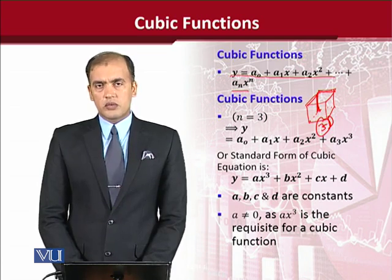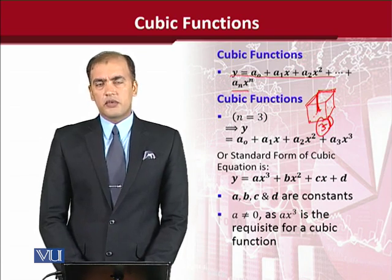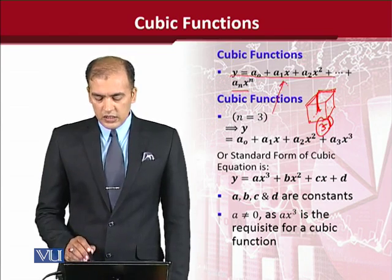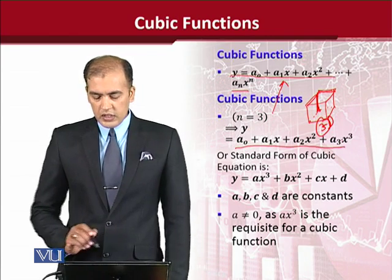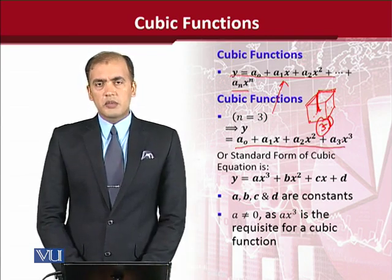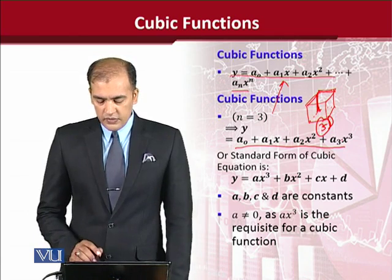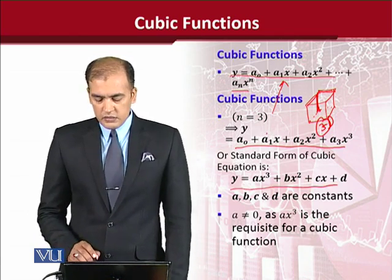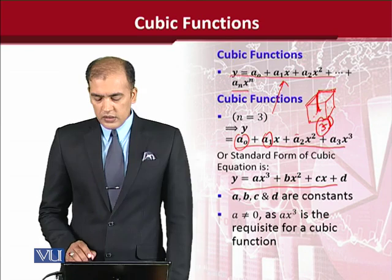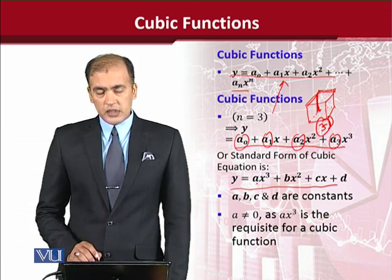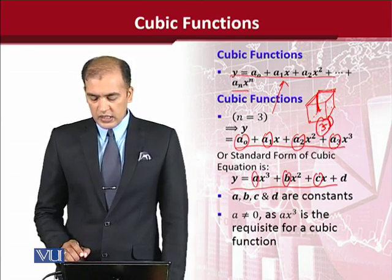Using the virtue stemming from its title, we say that n is equal to three. Putting the value n=3 into the standard form, we get the standard form of our cubic function. It can also be written in another way, shown just below it, where we have changed the coefficients and the constant to make it look simpler. The coefficients are a, b, c, and d.